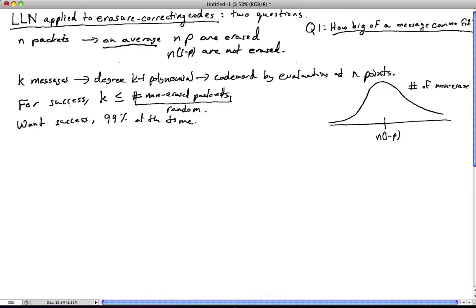Want success, say, 99% of the time. So success here means successful decoding. And 99% of the time means we transmit n packets, we get what we get. More than 99% of the time, what we get is more than enough to be able to decode that message. So let's model this. We want to find this k. So what is k? This is the question.